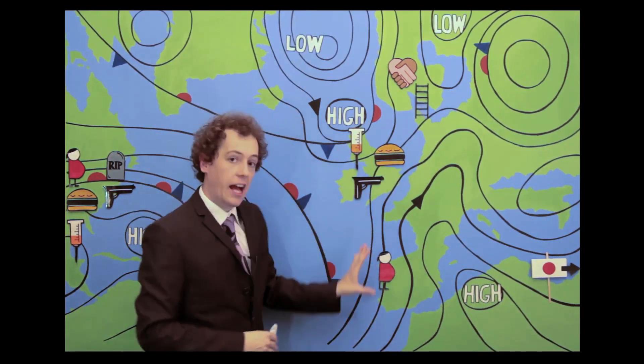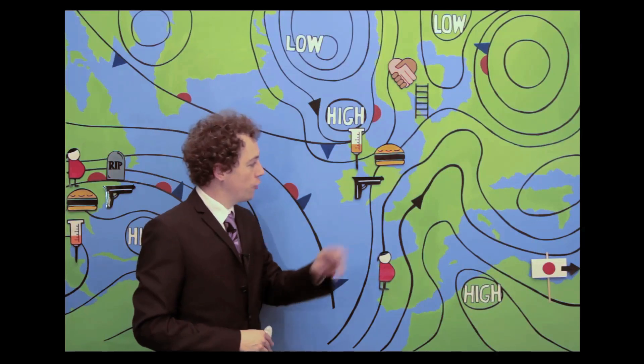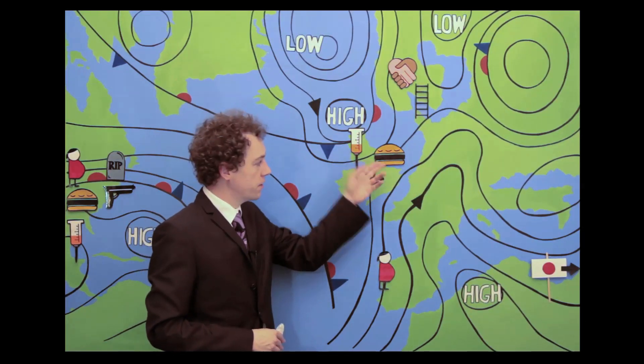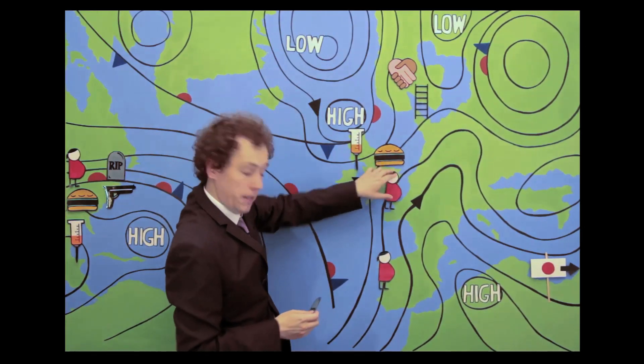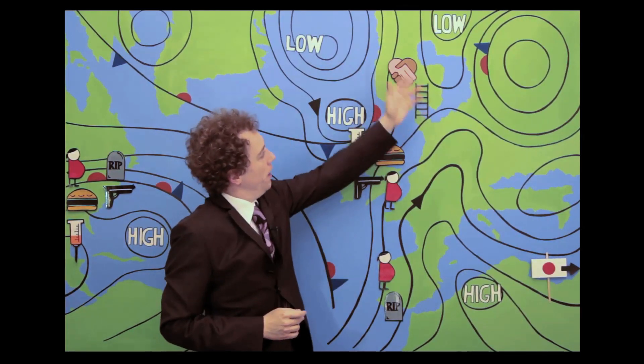Hello and welcome to today's inequality report. High-pressure fronts of inequality are sweeping over the United States, the UK, and Portugal, creating an increase in violence, drug dependence, obesity, teenage births, and premature death here, here, and here. Meanwhile, Scandinavia...